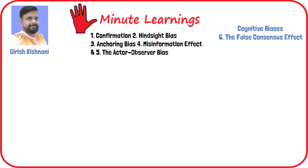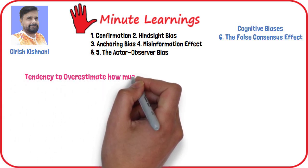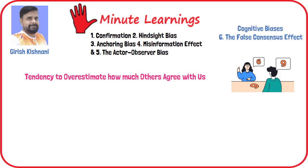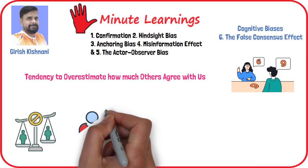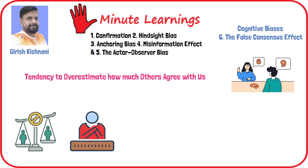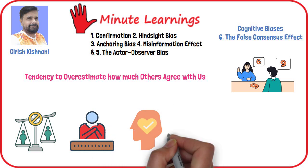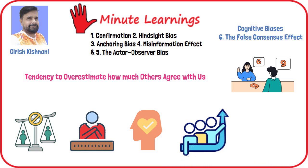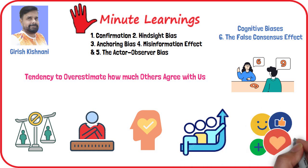According to social psychologists, the tendency to overestimate how much others agree with us is known as the false consensus effect. This is a kind of cognitive bias that leads people to believe their own values and ideas are normal and that the majority of people share these same opinions, even if that's not the case. For example, if you are very concerned about the environment, you will probably be more likely to overestimate the number of people who are also very concerned about environmental issues.